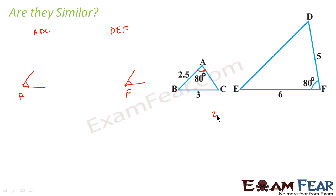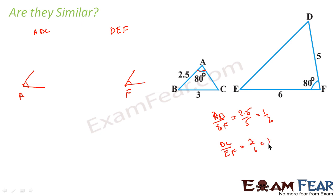AB by DF equals 2.5 by 5. Also, BC by EF is equal to 3 by 6. Both ratios are the same. So in the SAS rule, if one angle is the same and the two corresponding sides are proportional, then they are similar.